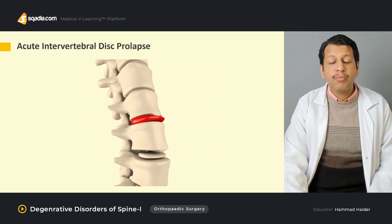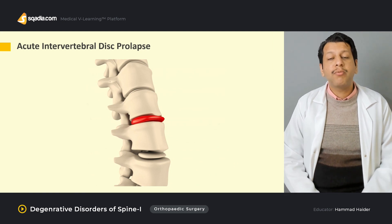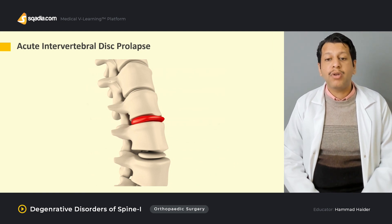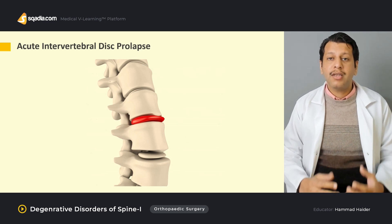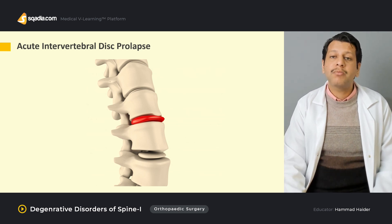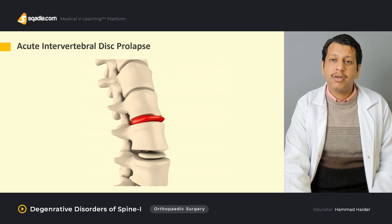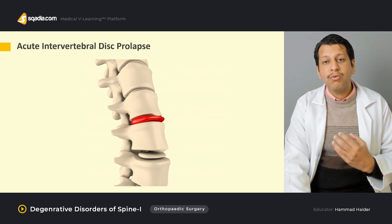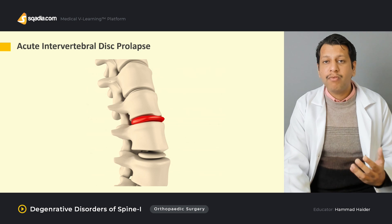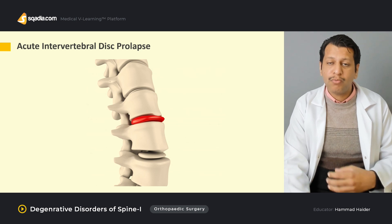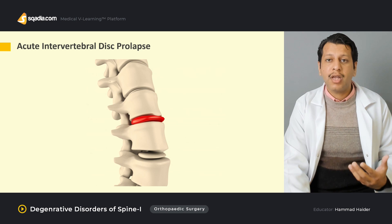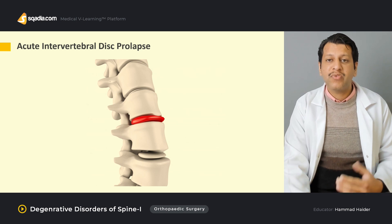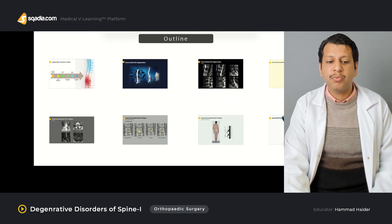From there we will cover acute intervertebral disc prolapse — signs and symptoms, how the patient presents, and what we need to look for, especially the different reflexes which may become diminished when the patient is having problems of radiculopathy or myelopathy.